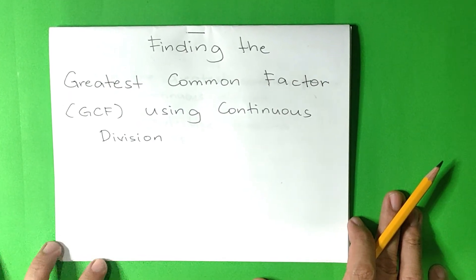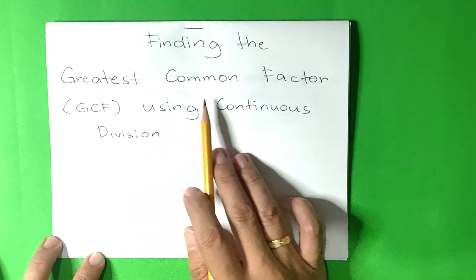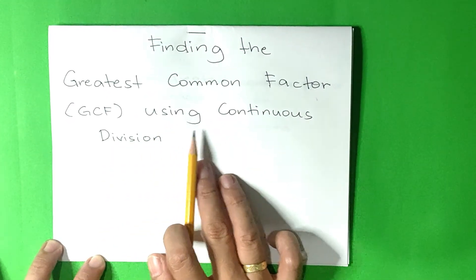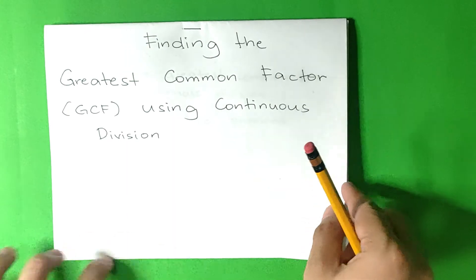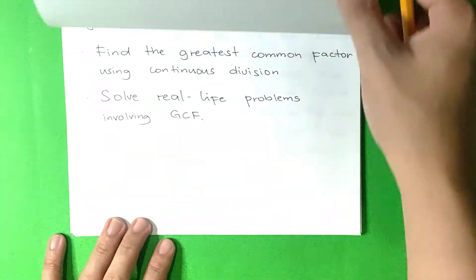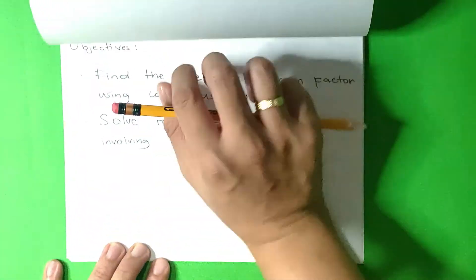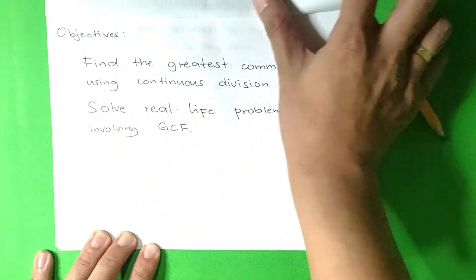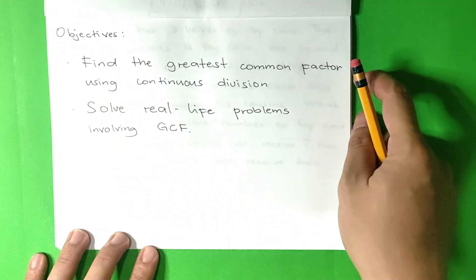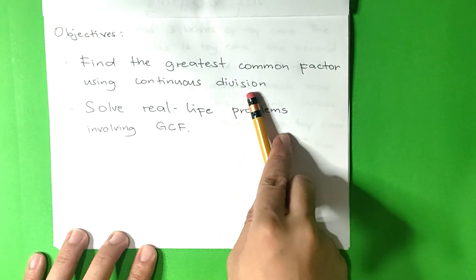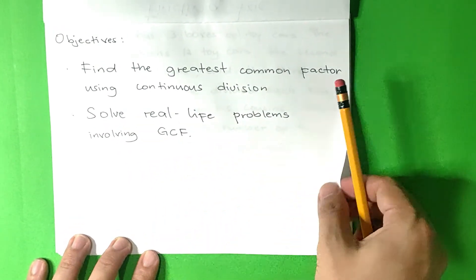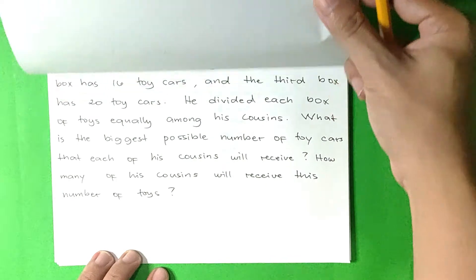Our lesson is about finding the greatest common factor or GCF using continuous division, also known as the ladder method. Our objectives are to find the greatest common factor using continuous division and to solve real-life problems involving GCF.